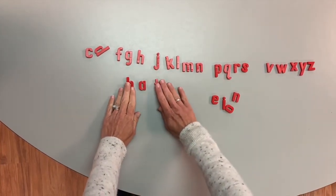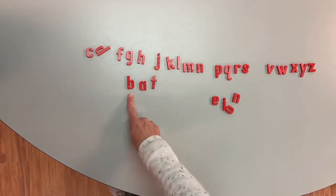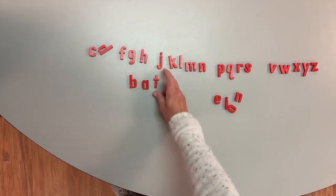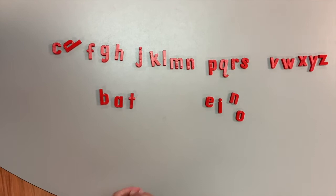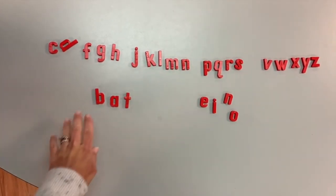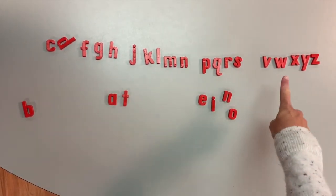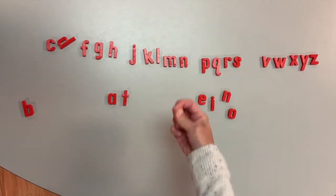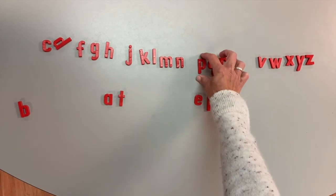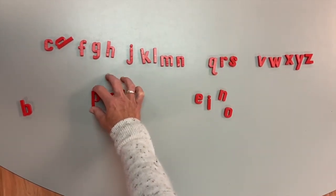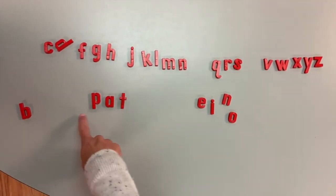After we make the word bat, what you should do then is take away the B and have your child look at the other letters that are left. Grab one and see what new word they could make. Maybe they grab the P and now you have them read the word: pat.